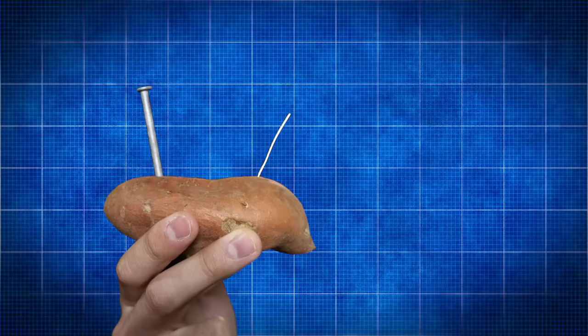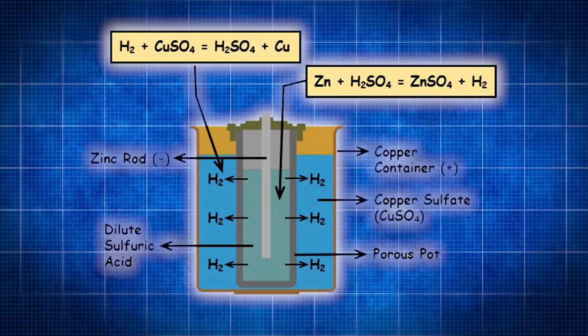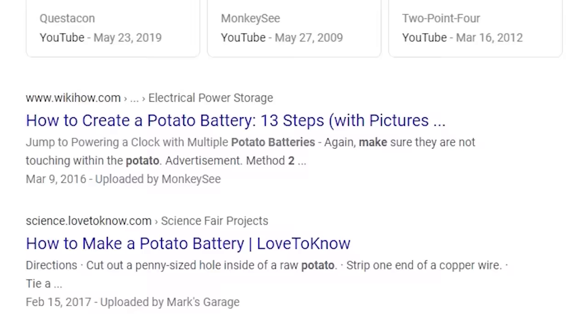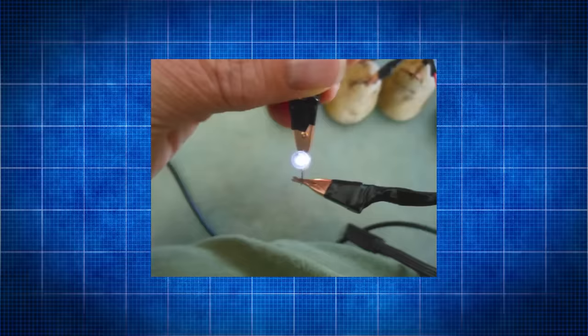So essentially what you're creating here is a copper-zinc battery made out of a potato. There's like a thousand how-to articles on Google on how to do this, but they're all powering like a little light, and I wanted to power a lot more than a little light.